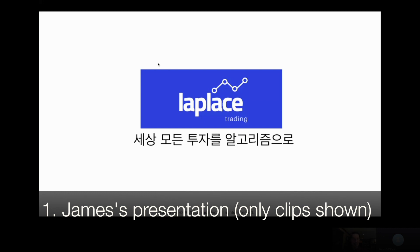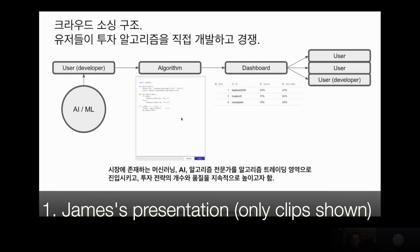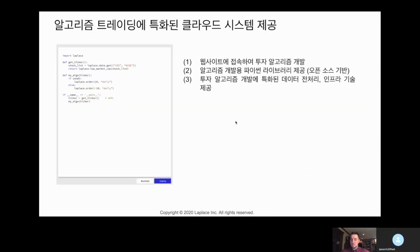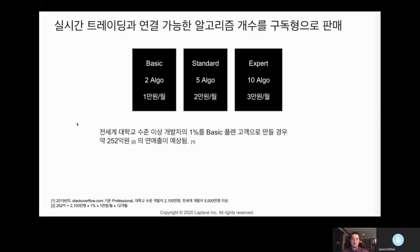All right, I'm ready whenever you are. Go ahead, James. Laplace uses a crowdsource structure. It means users can develop algorithms on the platform and they will compete with other customers through the dashboard. The dashboard will show the performance of the algorithm. Customers can develop the algorithm on the website and Laplace will offer a basic Python library to develop algorithms and also some data pre-processing modules and data infrastructure technology.